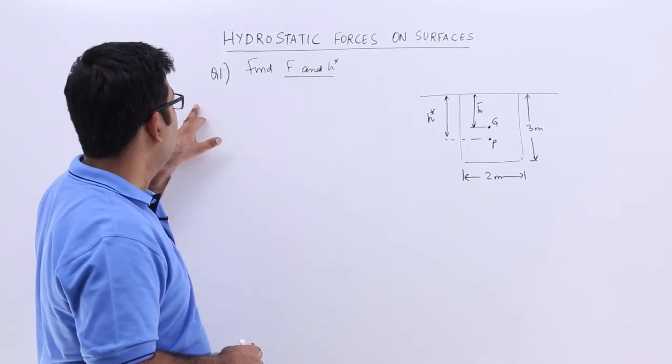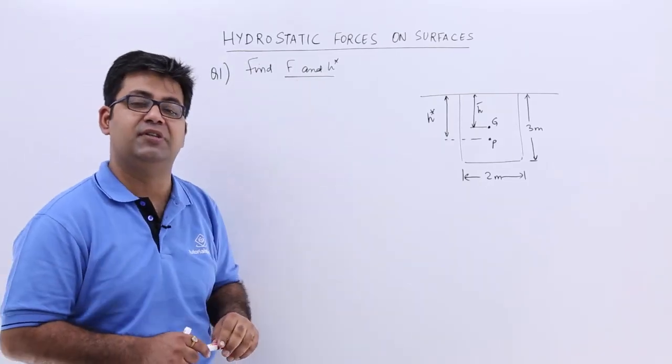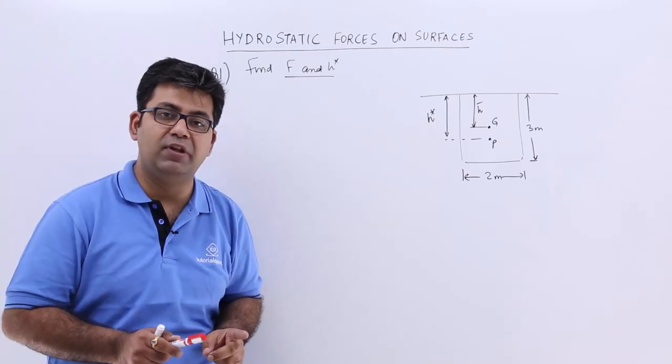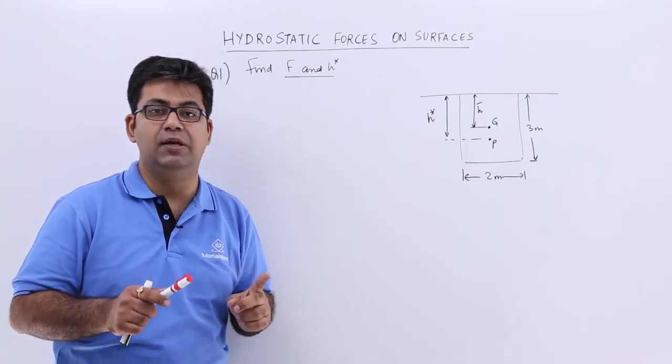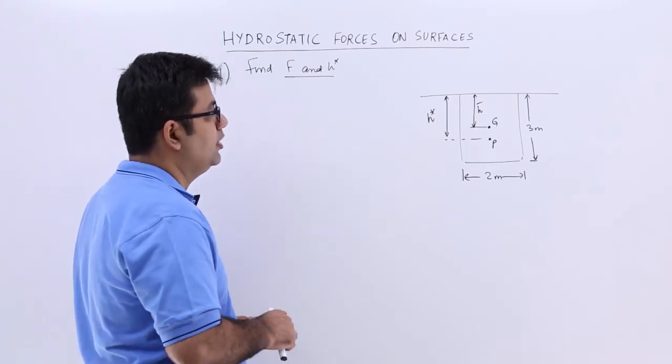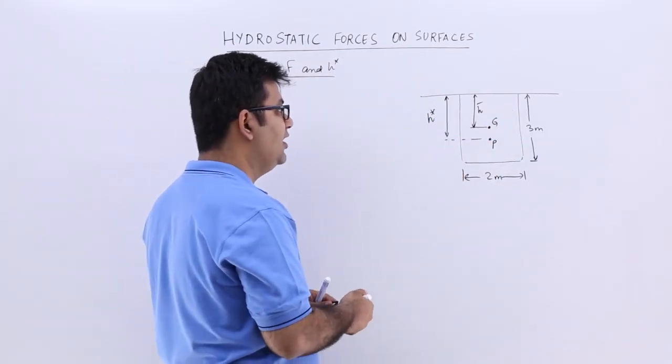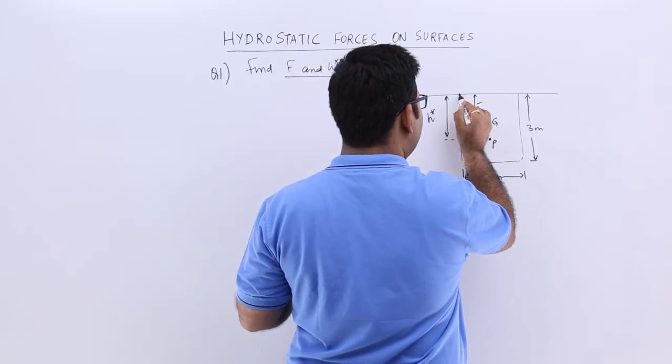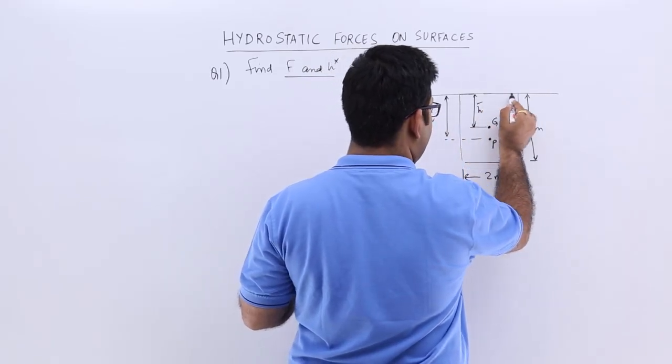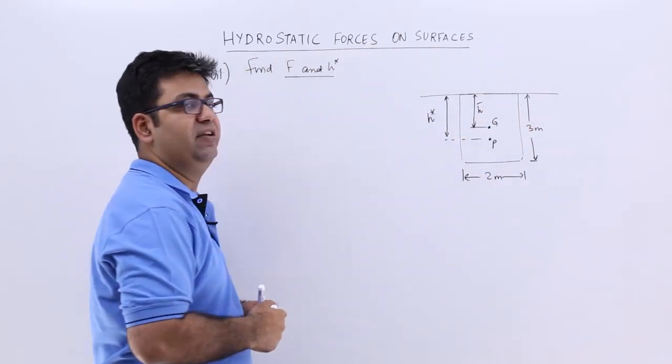Now let's talk about question number 1 on hydrostatic forces on surfaces. In this question we talk about a vertical surface which is submerged in a liquid. The rectangular surface is put in a liquid where the top surface or the top edge of the rectangle is coinciding with the free surface.